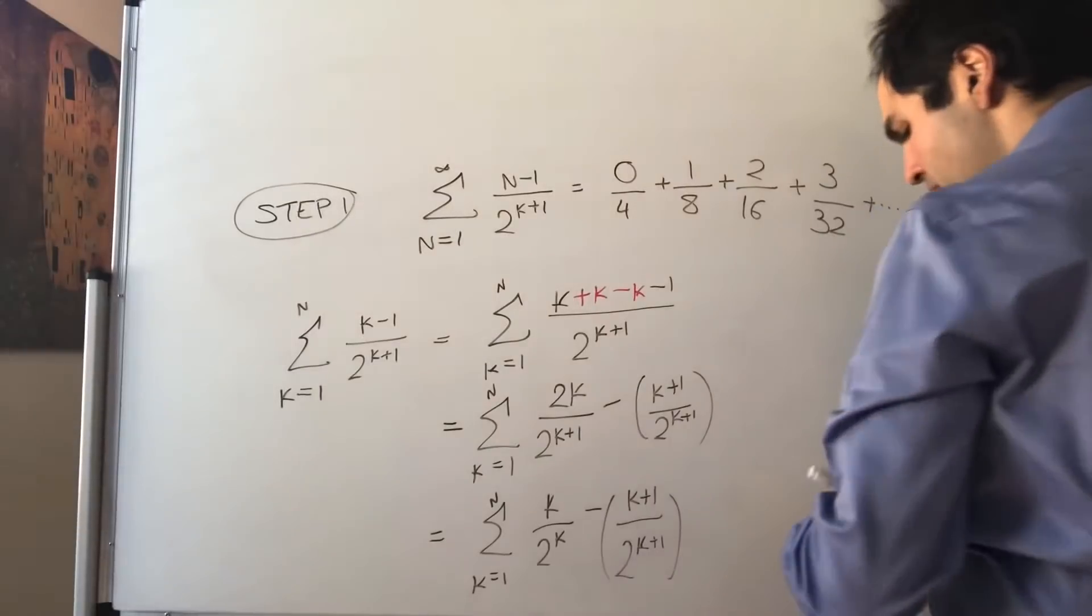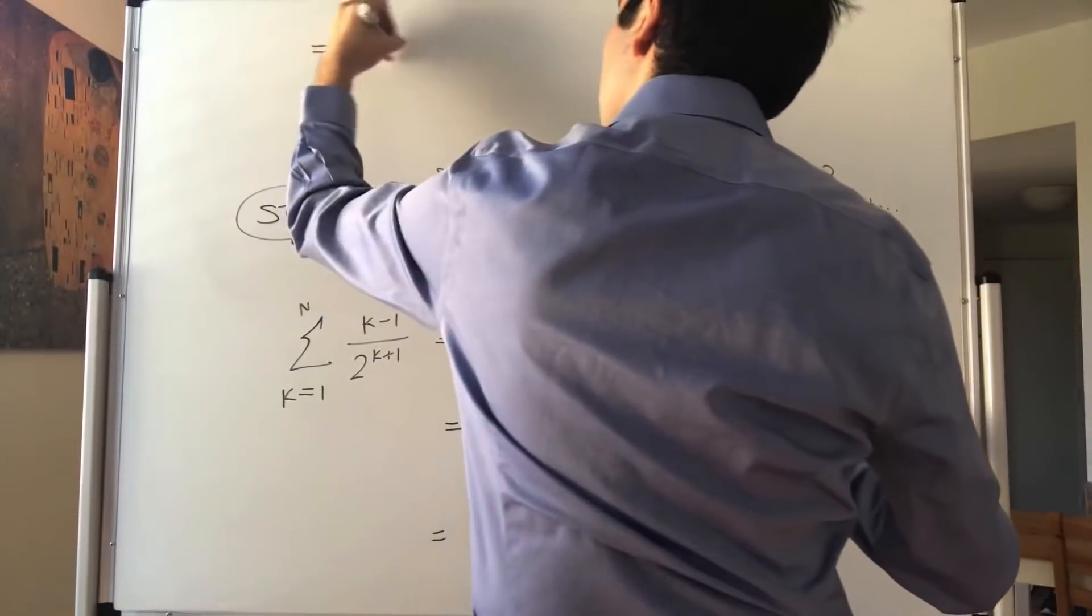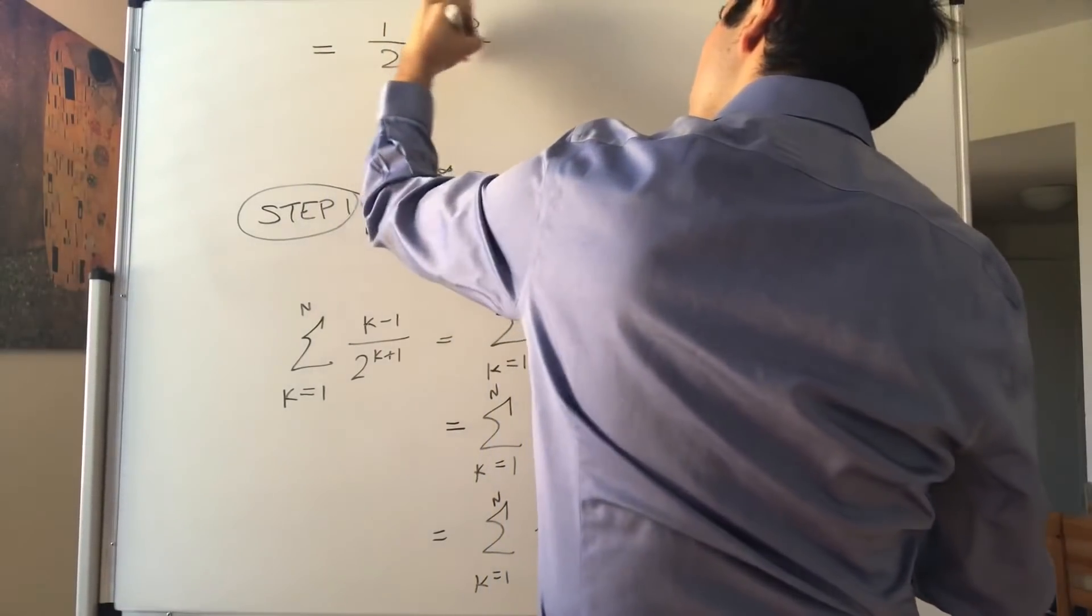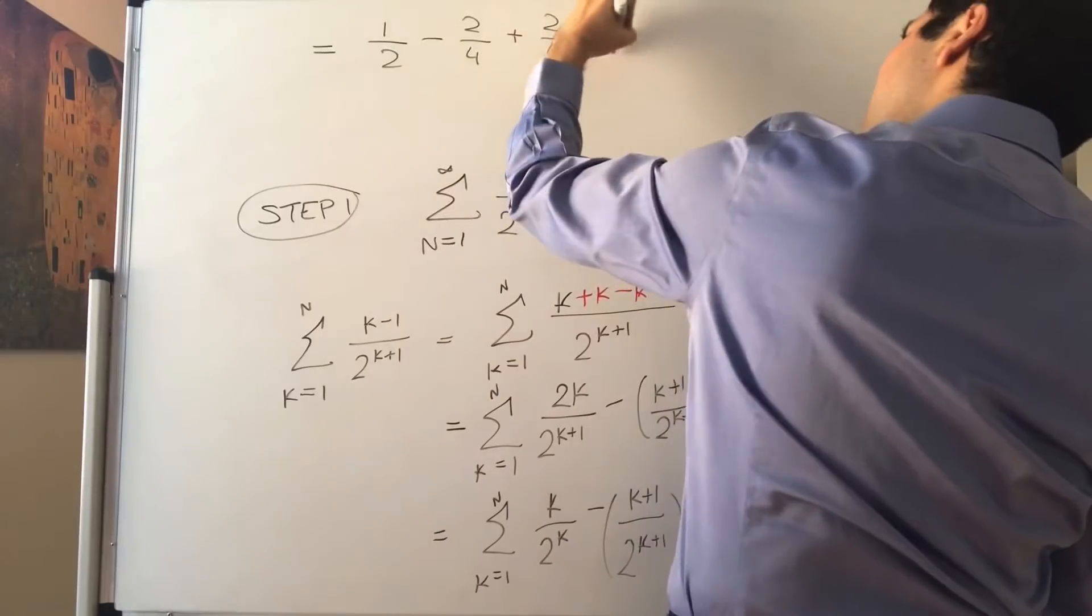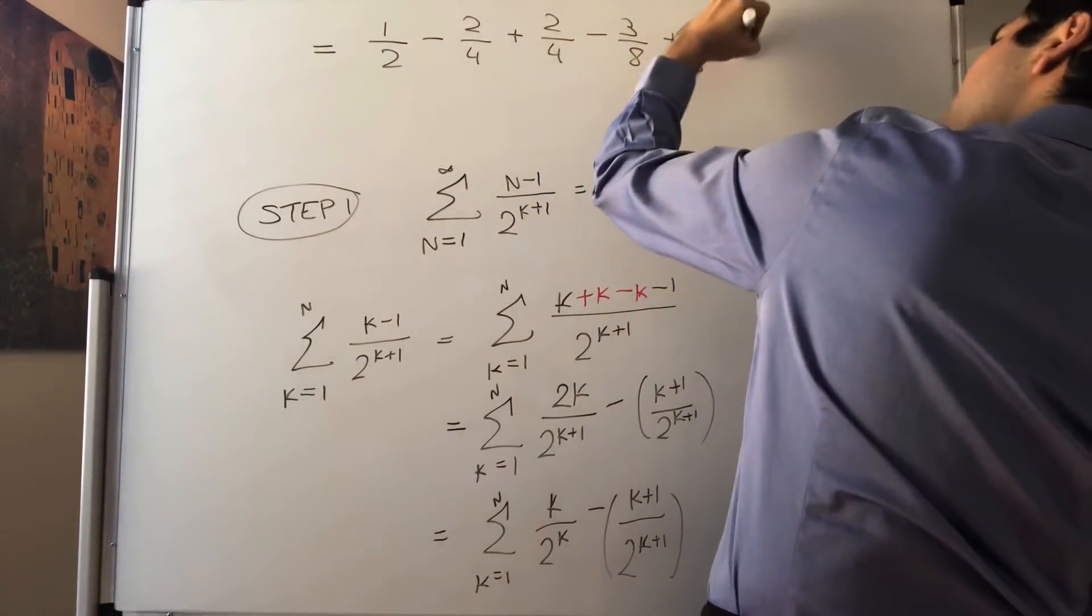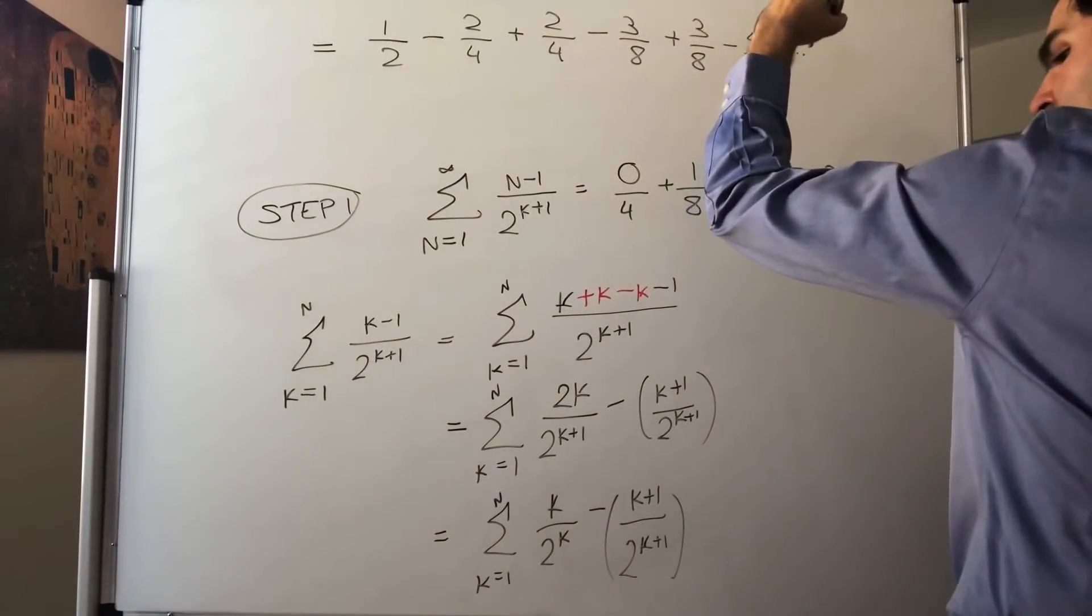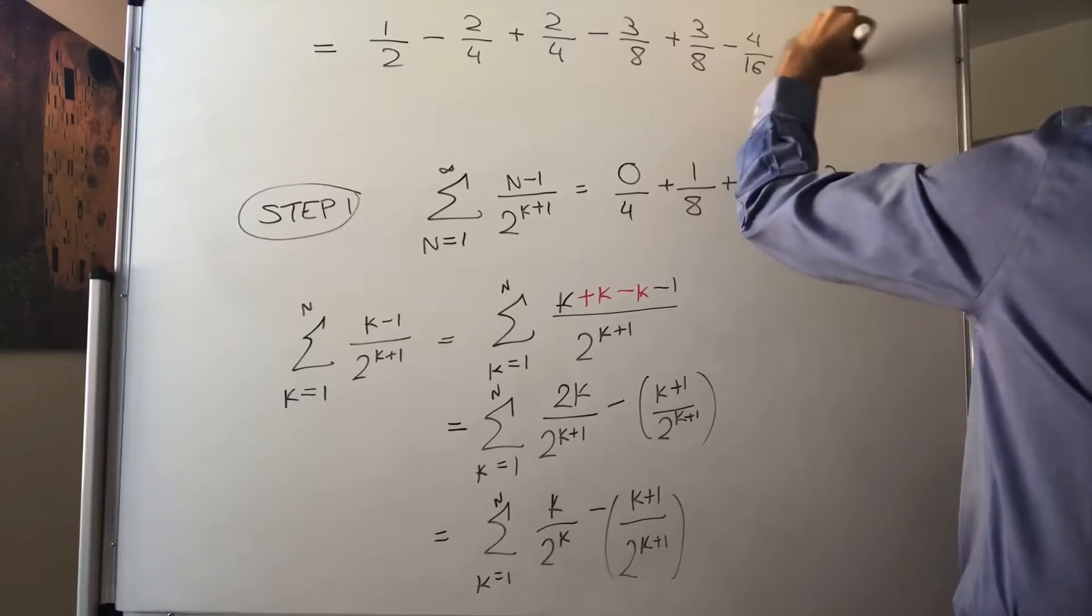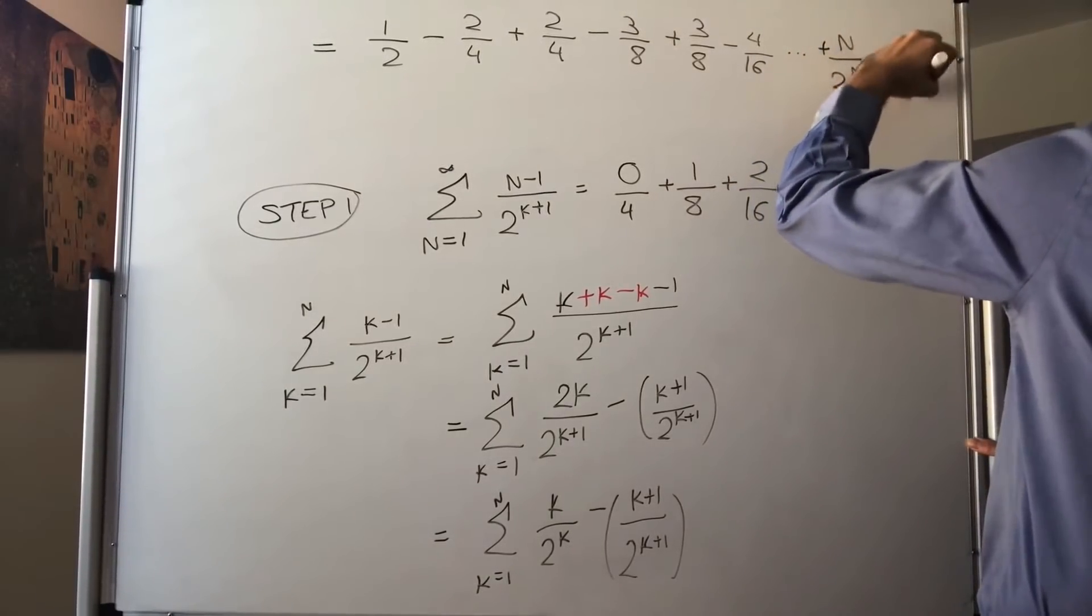So that becomes, let's see, so 1 half minus 2 quarters plus 2 quarters minus 3 eighths plus 3 eighths minus 4 over 16, dot dot dot. And then in the end, plus n over 2 to the n minus n plus 1 over 2 to the n plus 1.